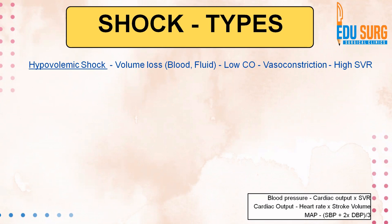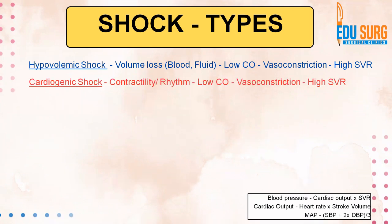So what happens? The system tries to compensate by causing a rise in the SVR and rise in the heart rate. So the heart rate goes up, systemic vascular resistance goes up, but still the cardiac output is low because volume is low.